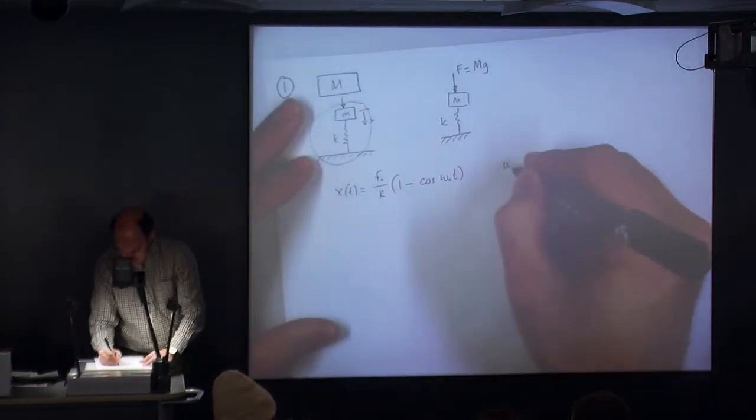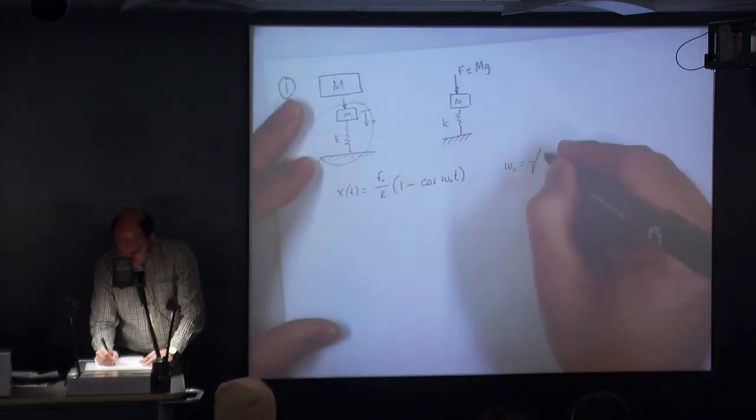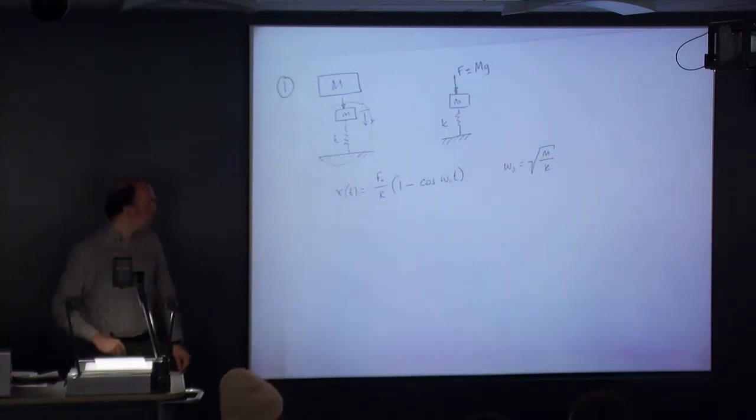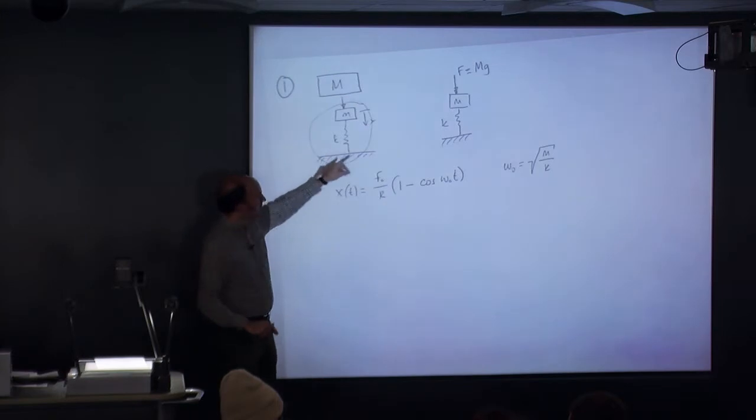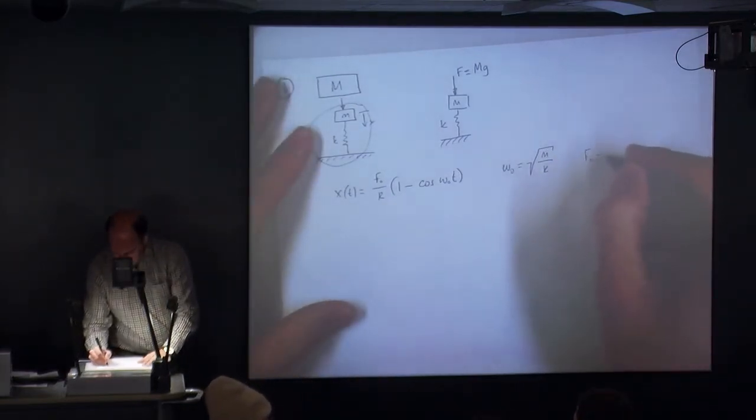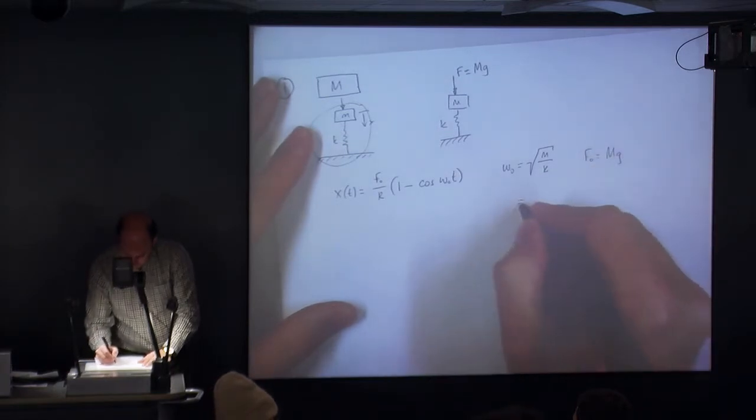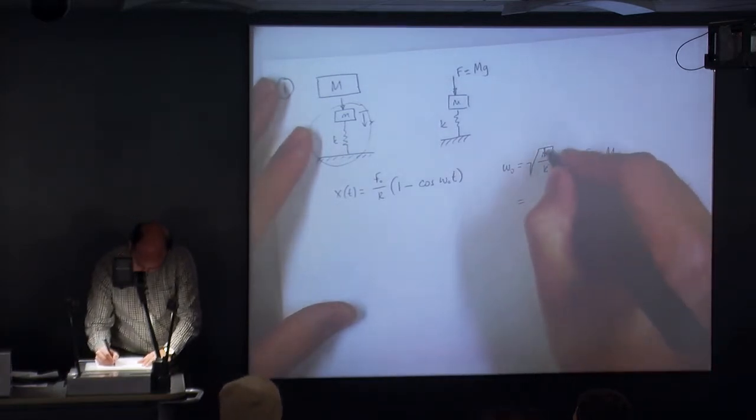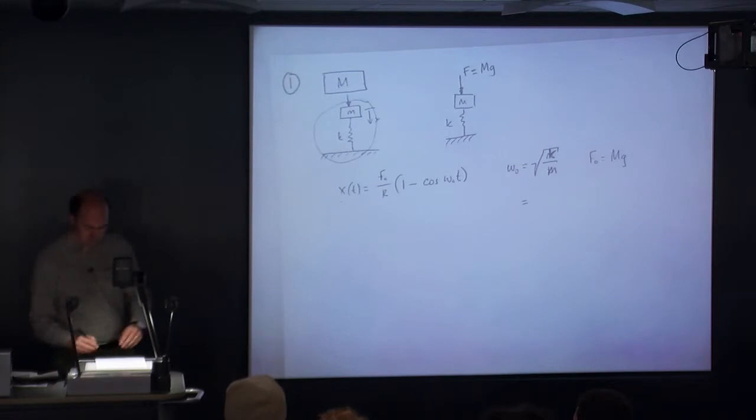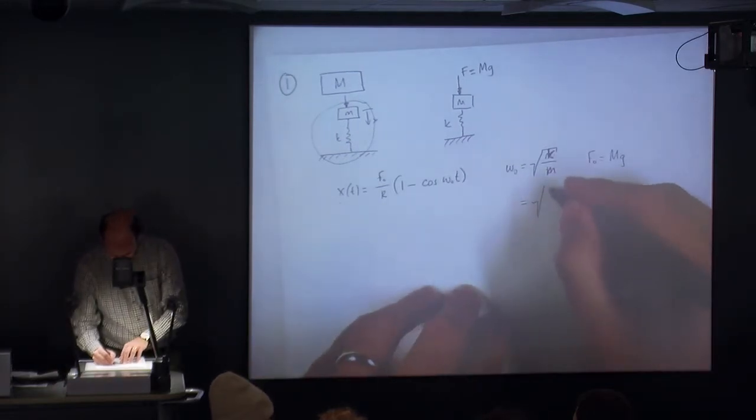We know that x of t equals f naught upon k, one minus cosine of omega naught t. Omega naught is going to be the square root of k upon m, because that's the natural frequency of the system. And obviously f naught is going to be big m times by g. Apologies, omega naught is root k upon m, not m upon k.